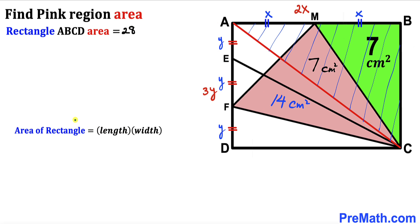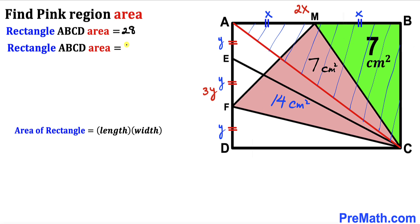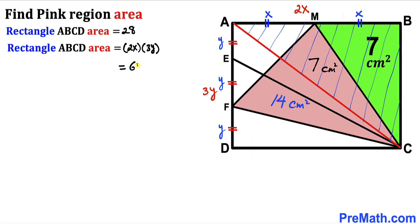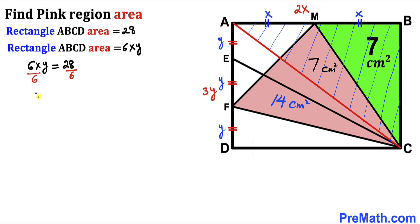Using the area formula — area equals length times width — the area of rectangle ABCD is 2X times 3Y = 6XY. We already found the area is 28 cm², so 6XY = 28. Dividing both sides by 6 gives XY = 14/3.